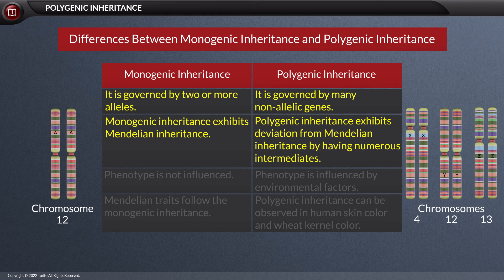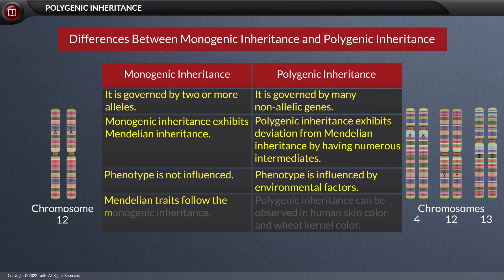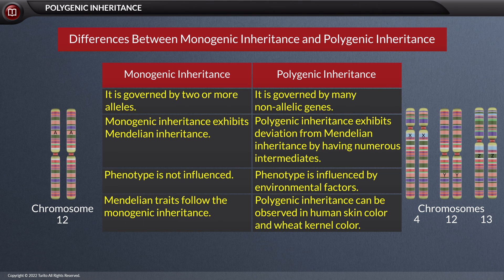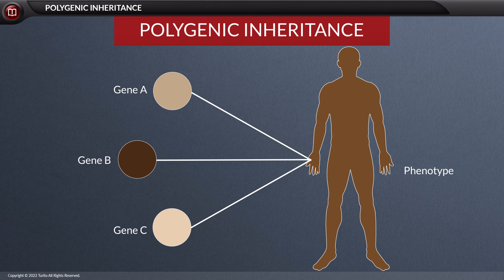During monogenic inheritance, the phenotype is not influenced by the environment, while during polygenic inheritance, the phenotype is influenced by environmental factors. Mendelian traits follow monogenic inheritance, while polygenic inheritance can be observed in human skin color and wheat kernel color. Thus, we learned about polygenic inheritance.